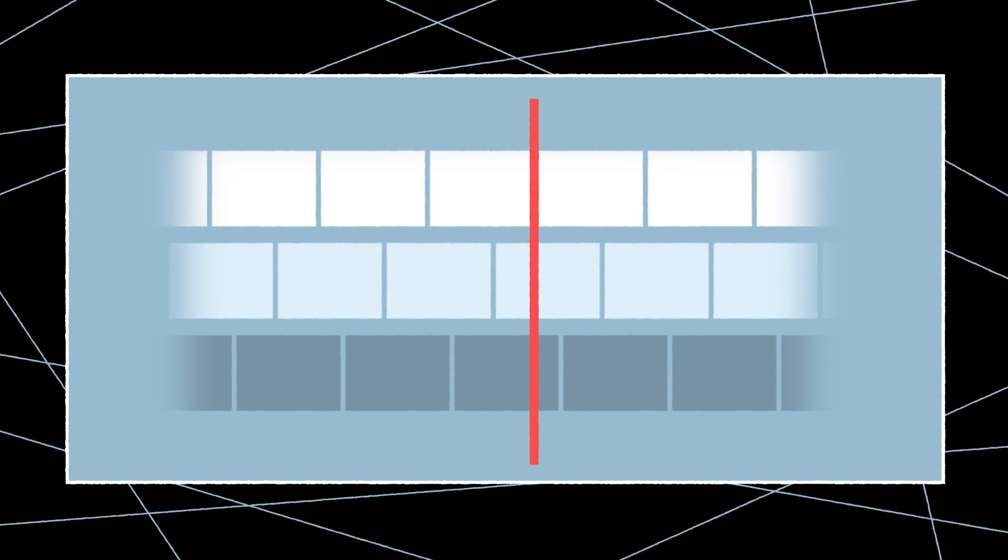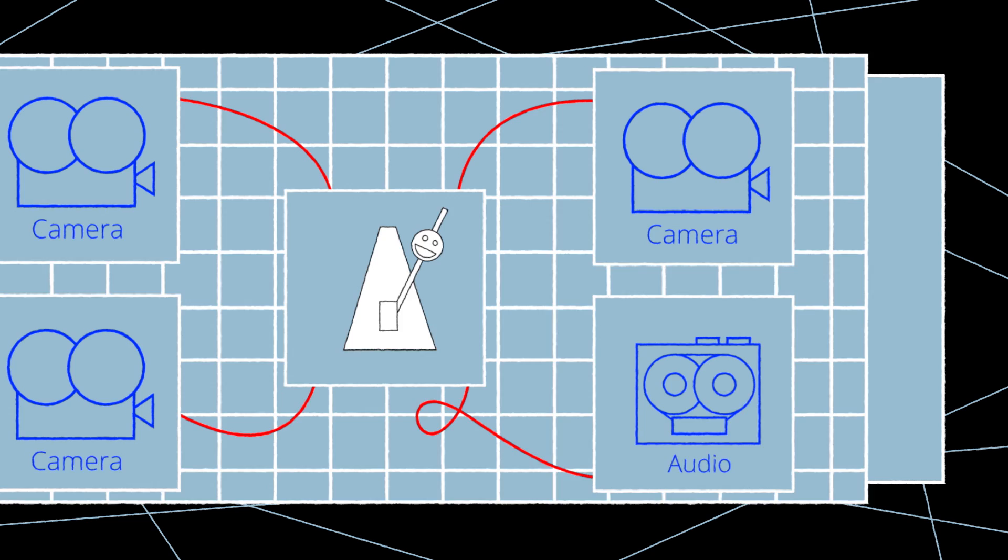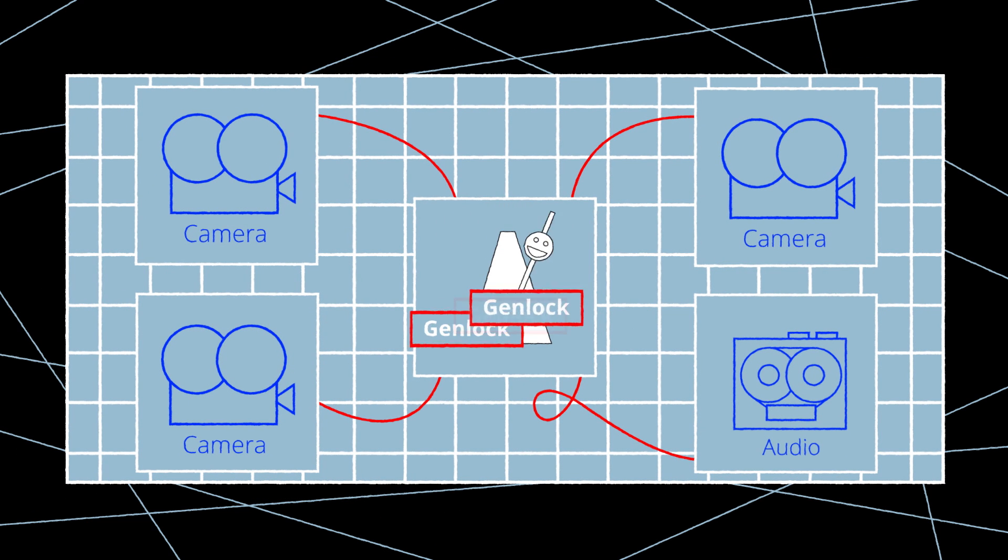So how do we solve the sync issue in our example? The material will sync when we control the clock speeds of the individual devices. There are two ways we can accomplish this. With the central house clock in the OB van with the Genlock sync and word clock outputs hardwired to all devices.